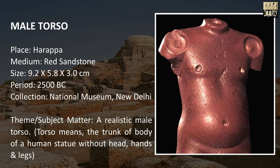Male Torso. Place: Harappa. Medium: Red sandstone. Size: 9.2 x 5.8 x 3.0 centimeters. Period: 2500 BC. Theme or subject matter: a realistic male torso. Torso means the trunk of the body of a human statue without head, hands, and legs.